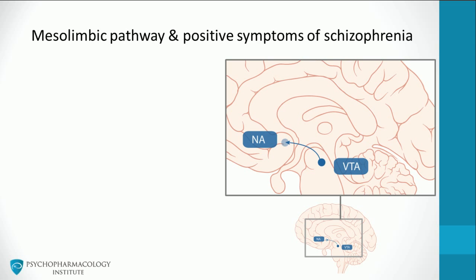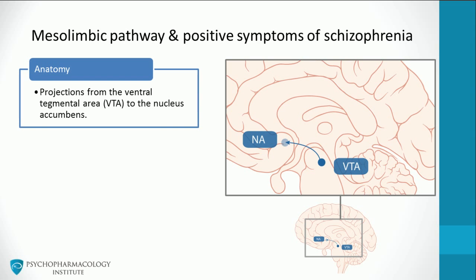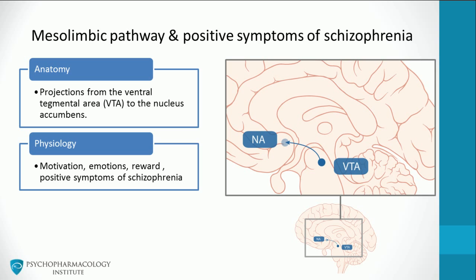The mesolimbic pathway is relevant to positive symptoms of schizophrenia. This pathway is made up of projections from the ventral tegmental area, which innervate many forebrain areas. The most important is the nucleus accumbens. Research suggests the system plays a key and complex role in motivation, emotions, reward, and positive symptoms of schizophrenia.